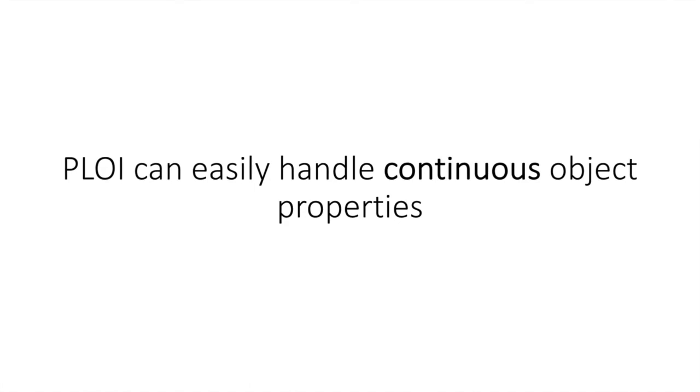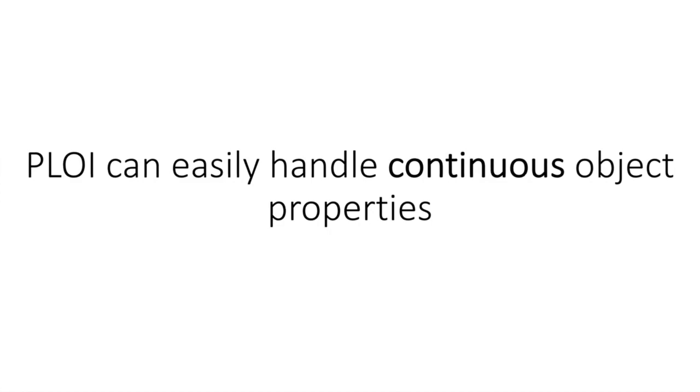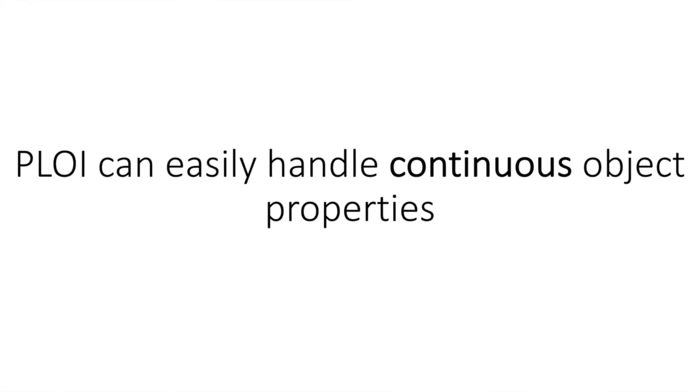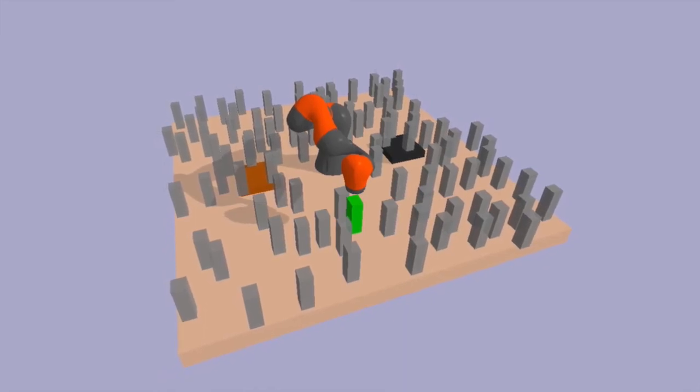One of the nice properties of PLOY is that it's able to reason about continuous object properties, since these properties are just additional inputs to the graph neural network. We demonstrate this ability in a continuous task and motion planning robotic domain.